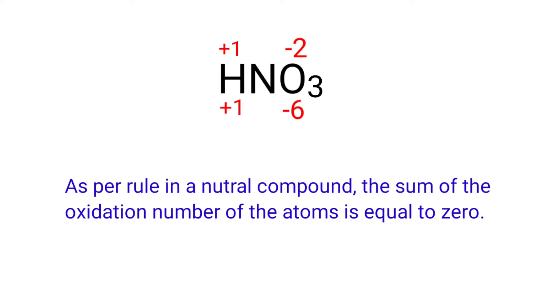So the number along the bottom must add up to zero. So the number under N must be plus five. So we can write the oxidation number of nitrogen is plus five.